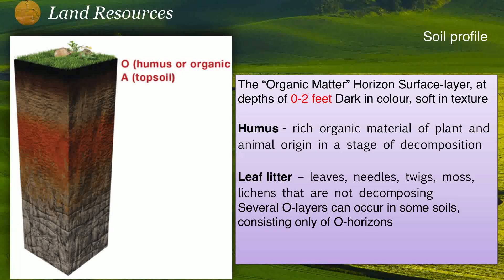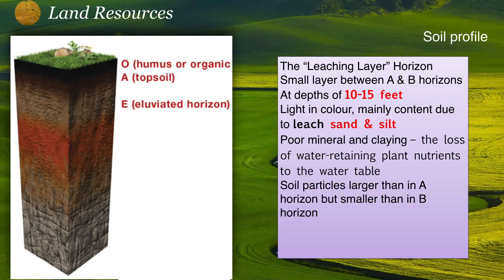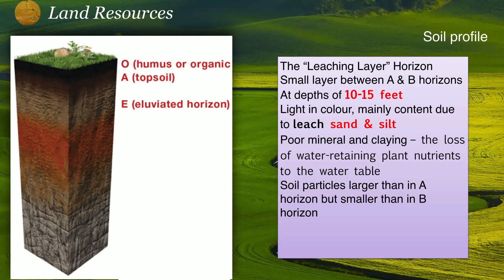The second is the E horizon, also called the leaching layer. It extends from about 10 to 15 feet and is light in color, mainly because of the sands and silt it contains. This layer contains a large amount of leached materials from the topsoil.